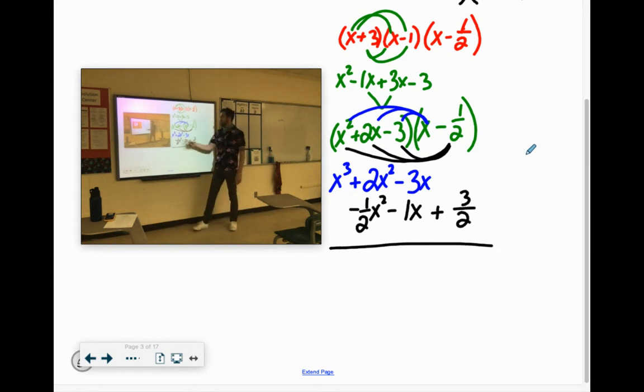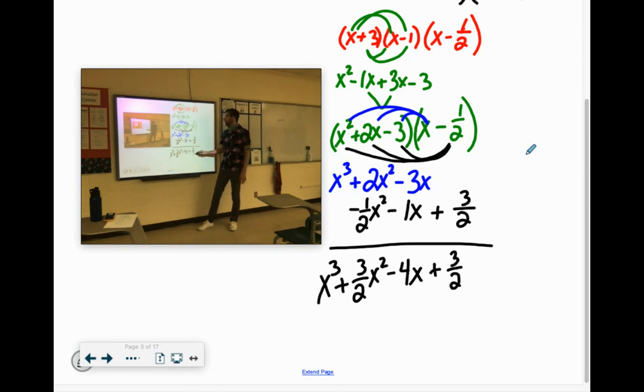So if we clean this up, we bring down our x to the third power. 2x squared minus 1 half x squared would be 1 and 1 half x squared. But we're going to write that as an improper fraction. So 1 and 1 half as an improper fraction would be 3 over 2 x squared. Negative 3x minus 1x is negative 4x. Now we have the plus 3 over 2.